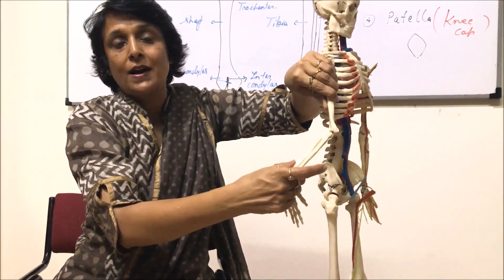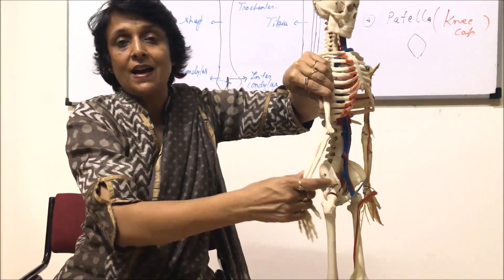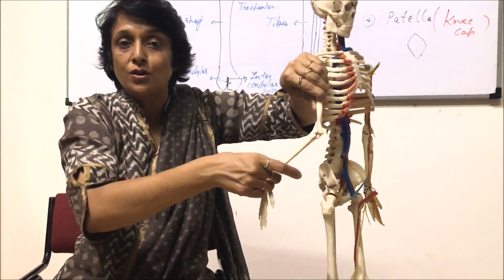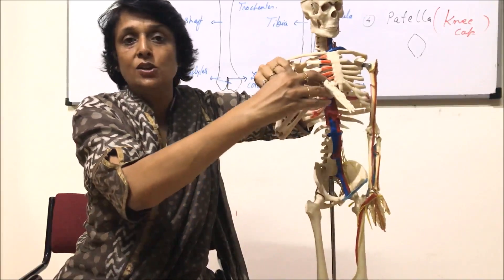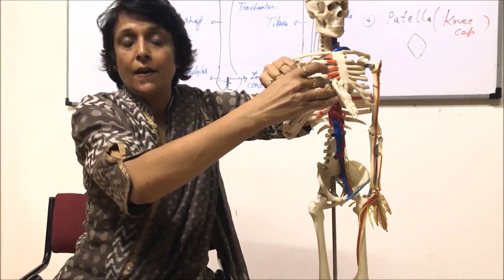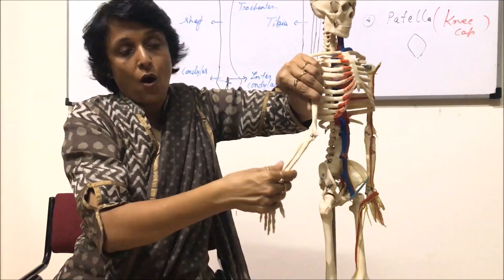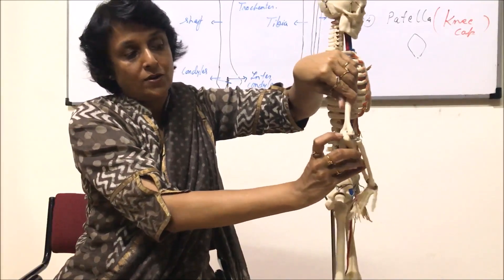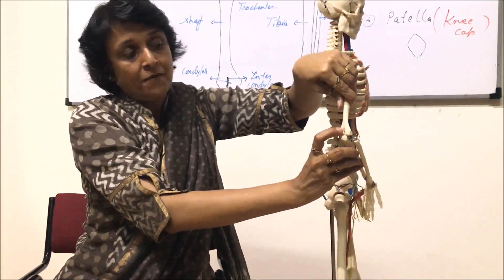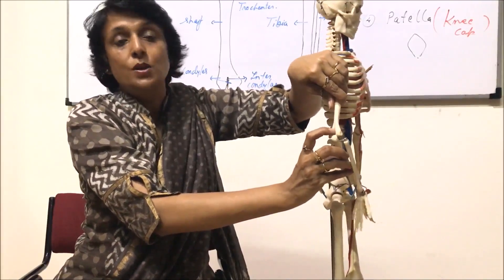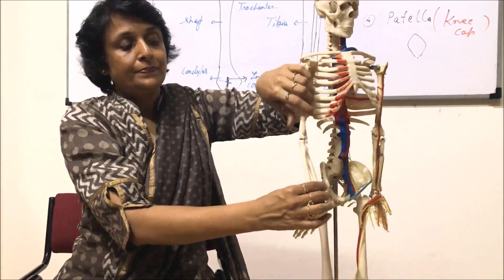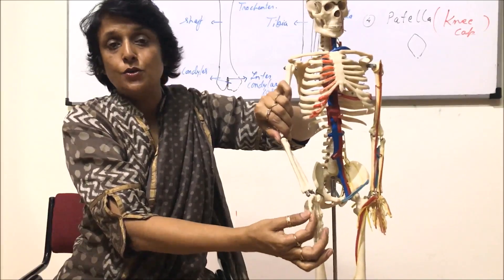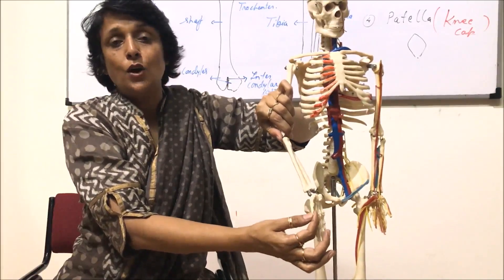If you see it from this side, this olecranon process allows the arm to fold, but if you move it backward it makes a lock kind of structure. That is why our elbow joint is not able to move in the opposite direction — this makes a hinge joint. This olecranon process, which acts as a hook-like structure, fits into a depression known as the fossa.